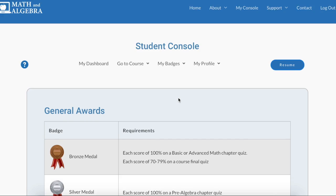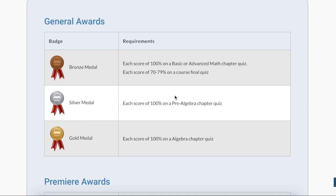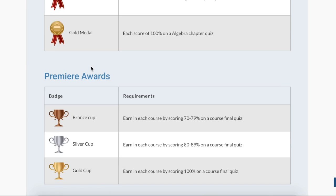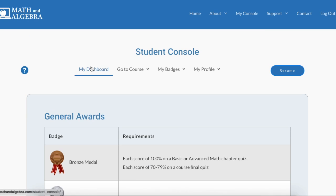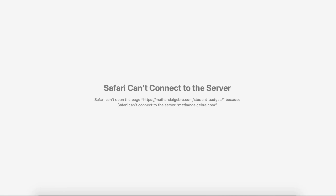So this is where your kids get their awards for the work that they have done. So here we go. Each score of 100 on a basic or advanced math chapter. Each score of 70 to 79 on a course final quiz. So each one is going to tell you what they can earn those for. So this is all the ones they can earn.